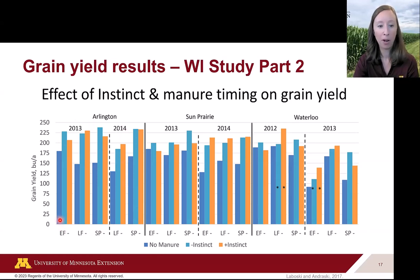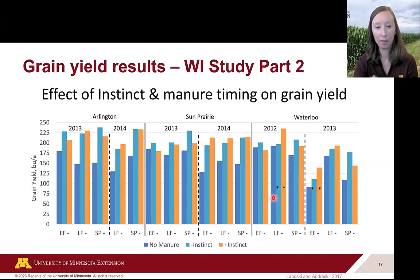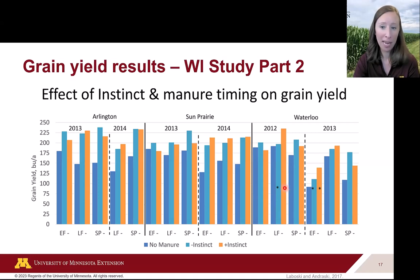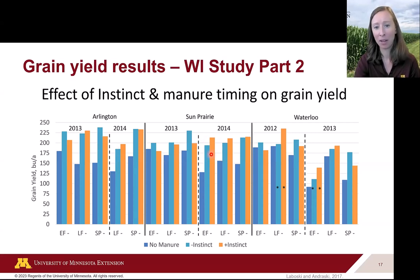In this expanded study's bar graph — with dark blue for no manure, middle bar for manure without Instinct, and orange for manure with Instinct — across all site-years there were very few statistical differences. The only significant differences appeared for late fall application in 2012 at Waterloo, and early fall application in 2013 at Waterloo. At Sun Prairie and Arlington, no statistical differences were detected, and sometimes manure without Instinct performed better than with Instinct, making the results inconsistent.